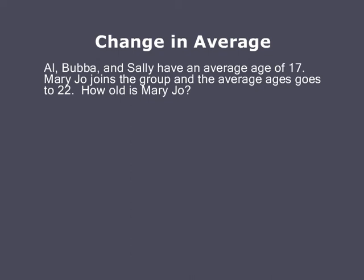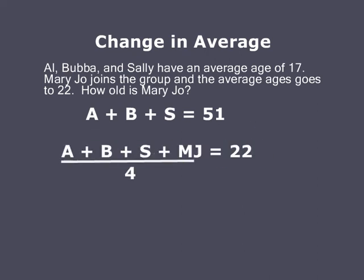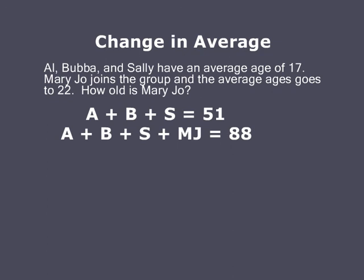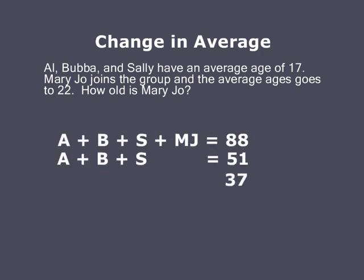Remember, we go to the totals here. So if the three of them have an average age of 17, 3 times 17 tells us they total 51 years. When they add Mary Jo to the group, the four of them have an average age of 22, so they total 88. There's a difference of 37 years and it has to be Mary Jo.